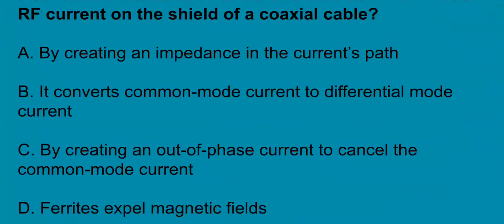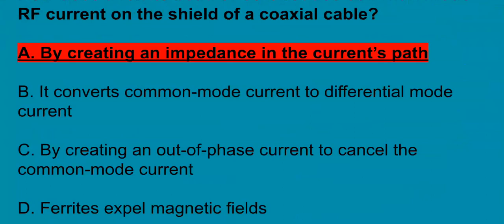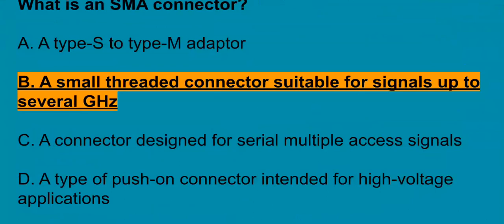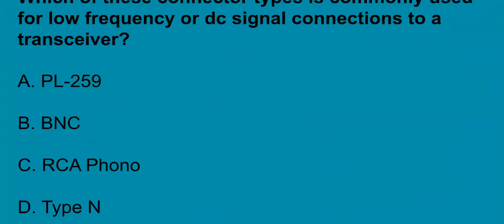G6B10, how does a ferrite bead or core reduce common mode RF current on the shield of a coaxial cable? By creating an impedance in the current's path. G6B11, what is an SMA connector? An SMA connector is a small threaded connector suitable for signals up to several GHz. G6B12, which of these connector types is commonly used for low frequency or DC signal connections to a transceiver? It's going to be the RCA phono plug.